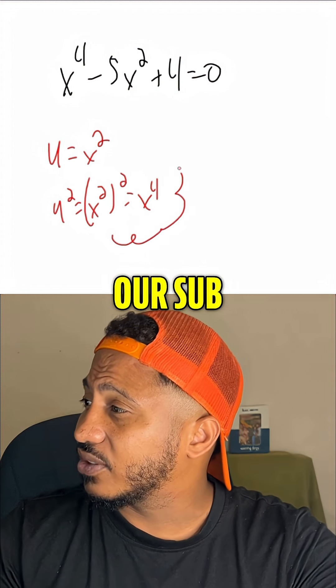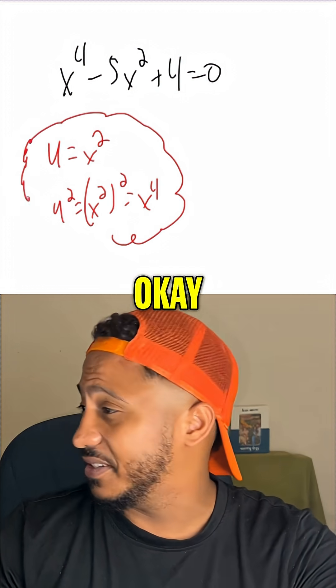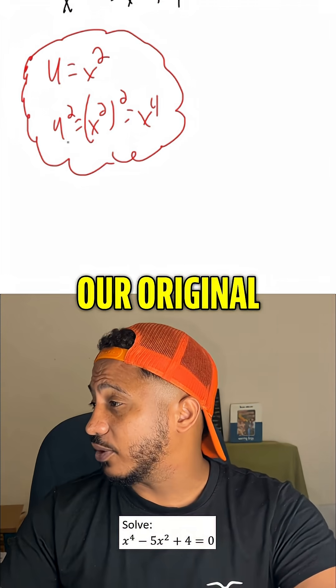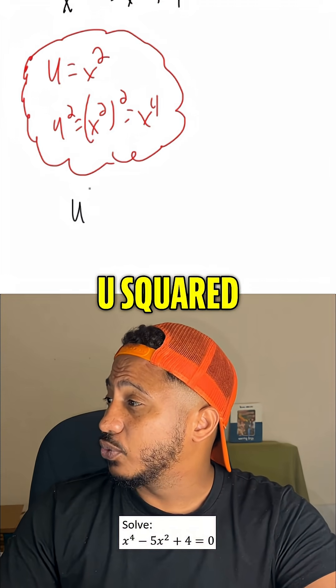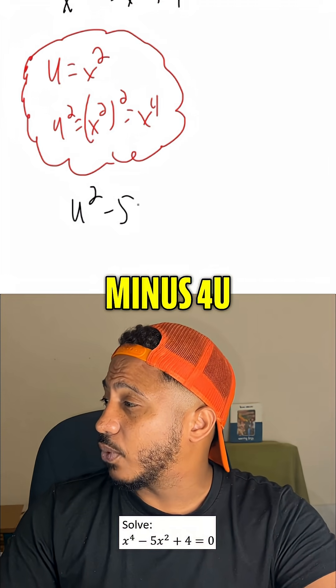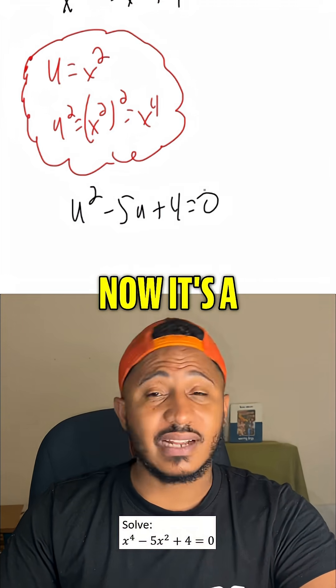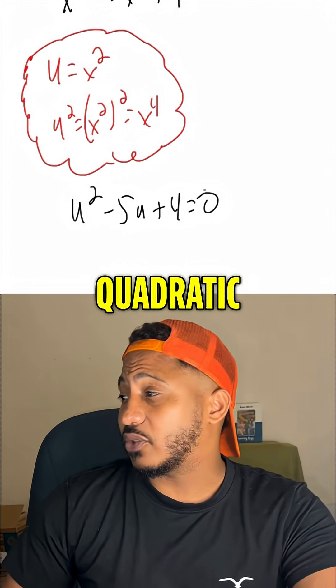And so this is our sub bubble, our subble. We can now substitute that information back into our original equation. So this becomes u squared minus 4u plus 4 equals 0. Now it's a lot easier to solve, right? Because it's just a quadratic.